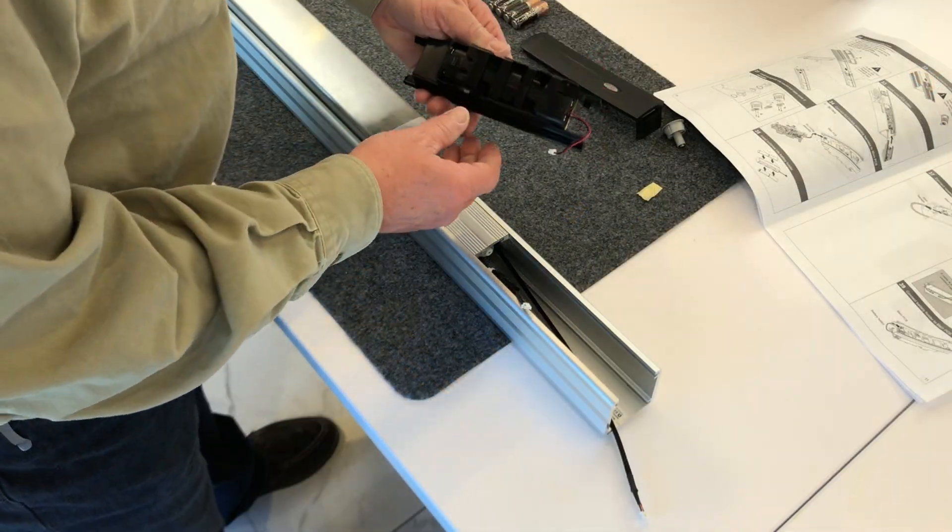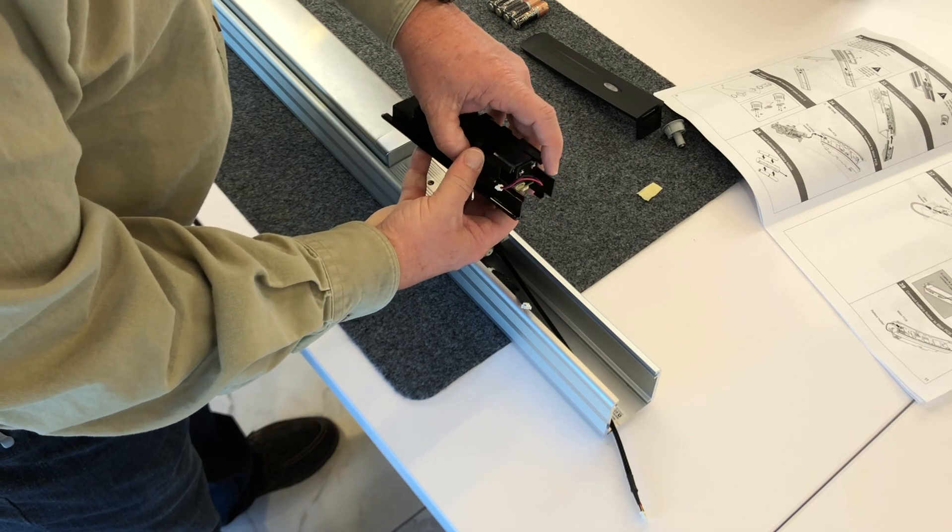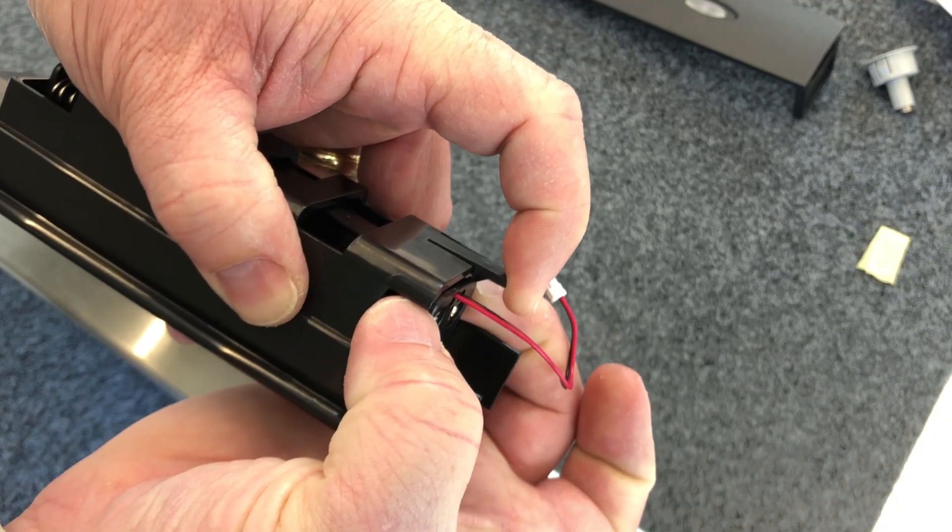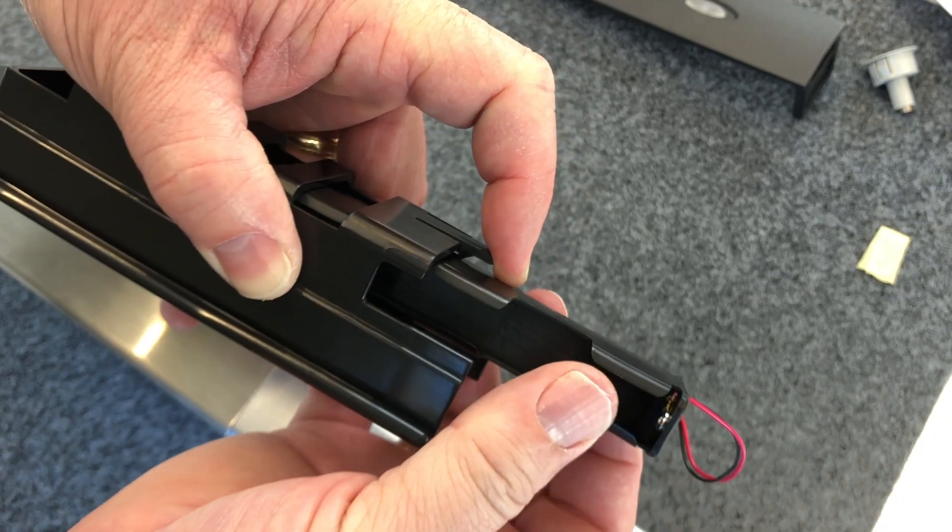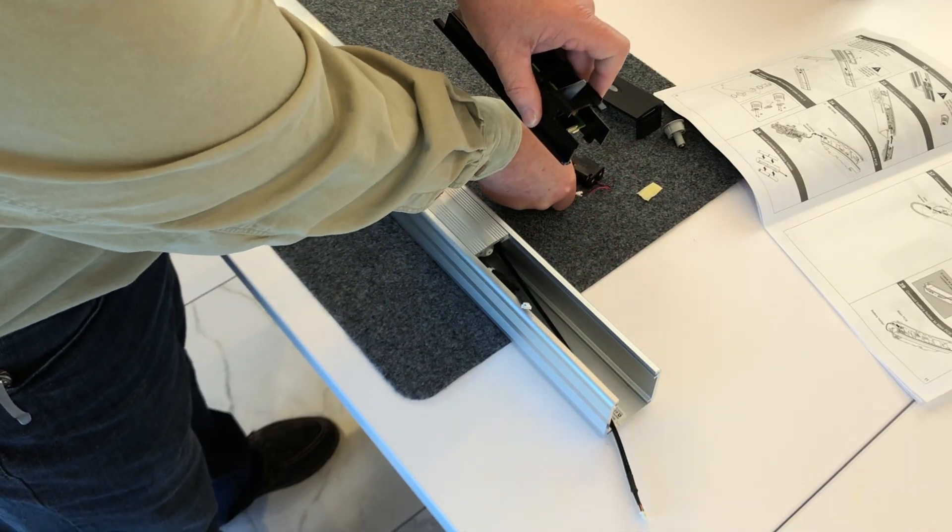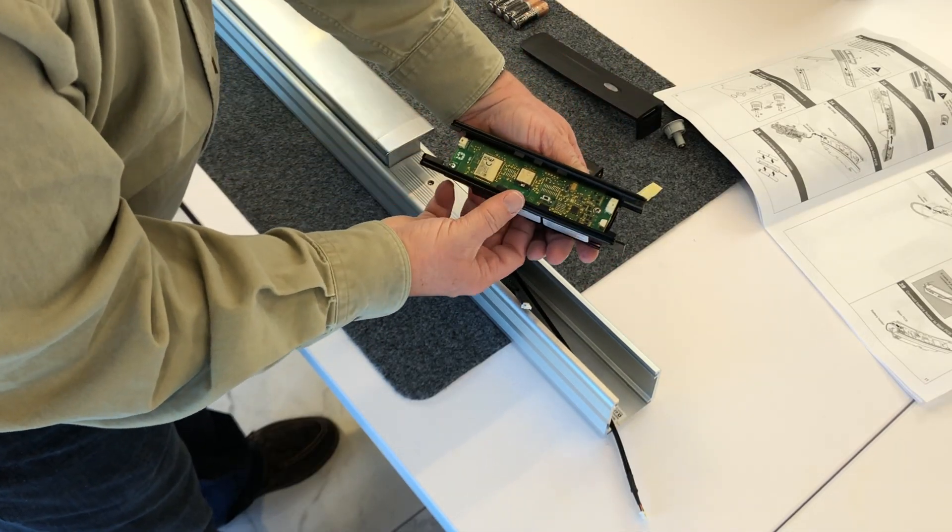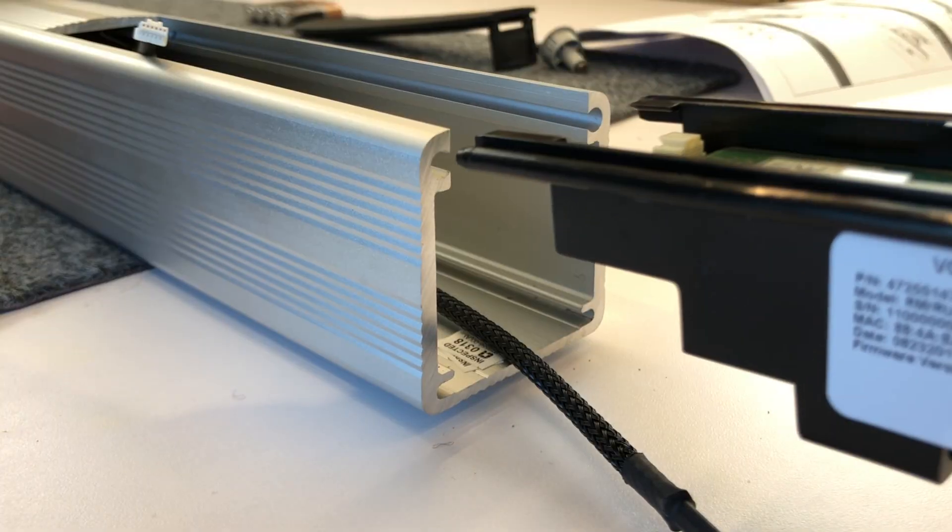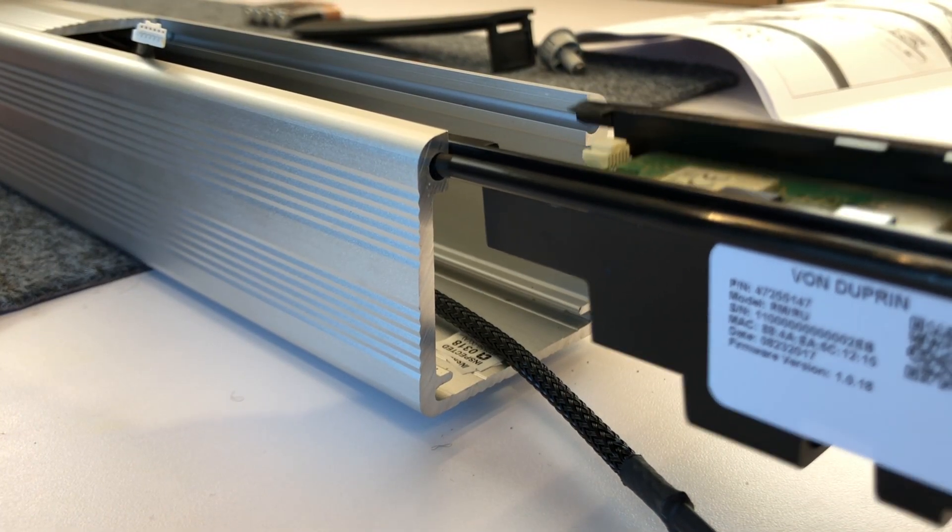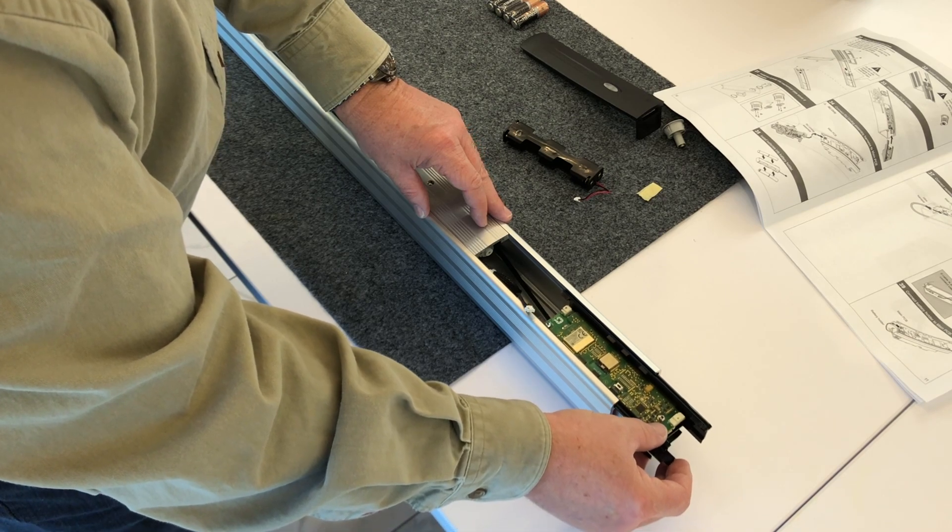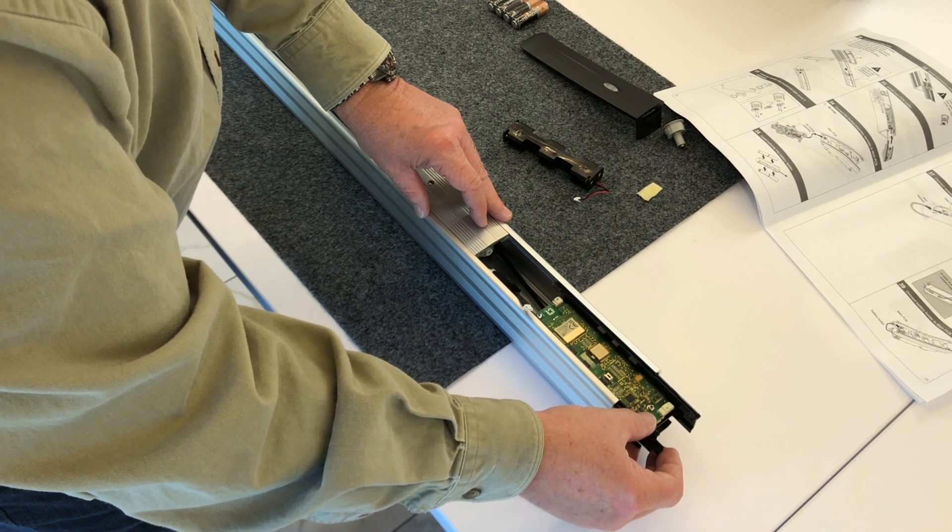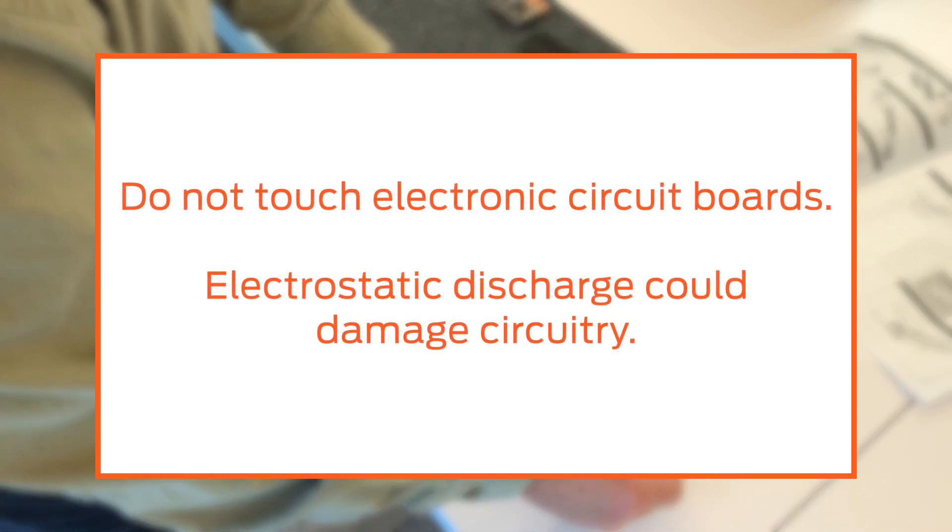Remove the battery case from the main PCB holder lifting on the tab while pulling out the case as shown. Then, slide the main PCB holder, Allegion logo first, into the grooves of the mechanism case. Aligning the rails of the holder with the grooves of the case. Use caution not to touch the surface of the electronic circuit boards. Electrostatic discharge could damage the circuitry and cause intermittent operation or component failure.